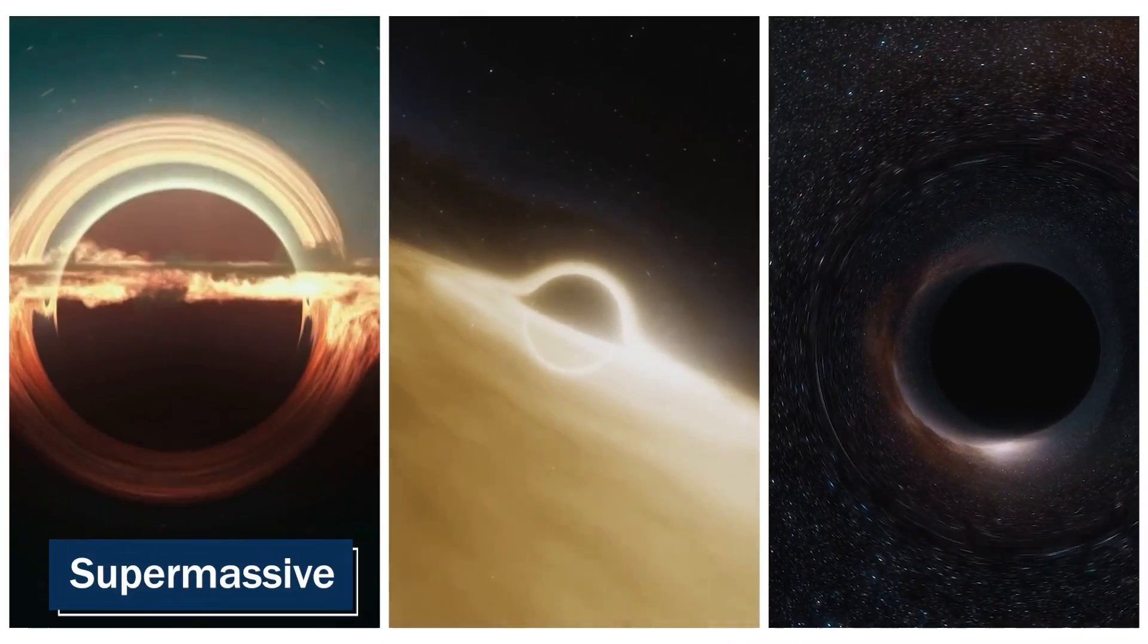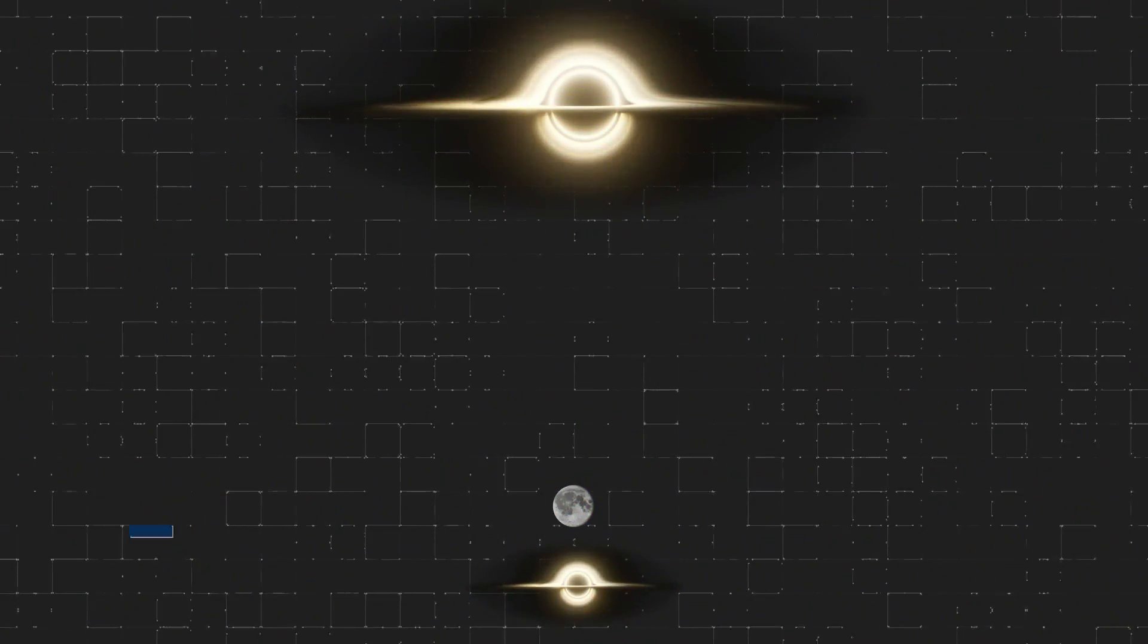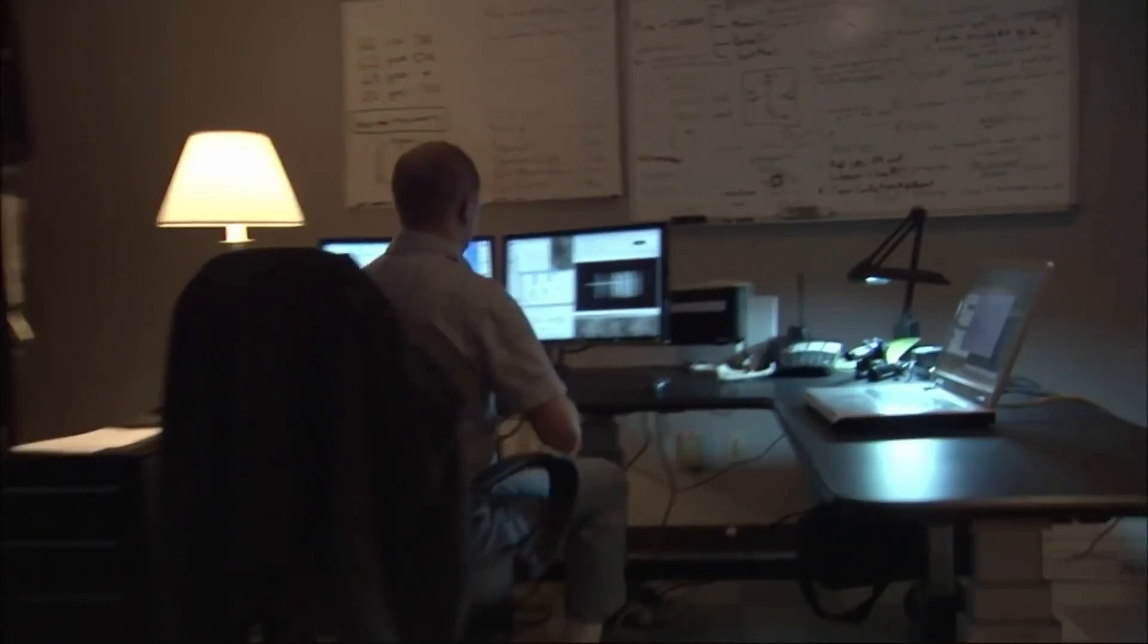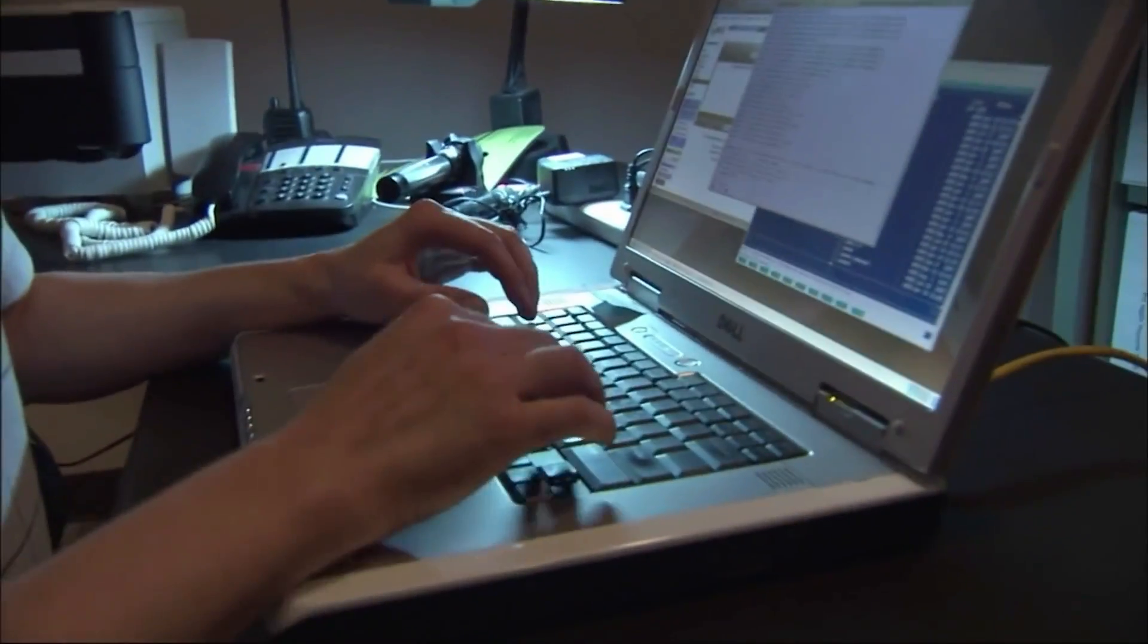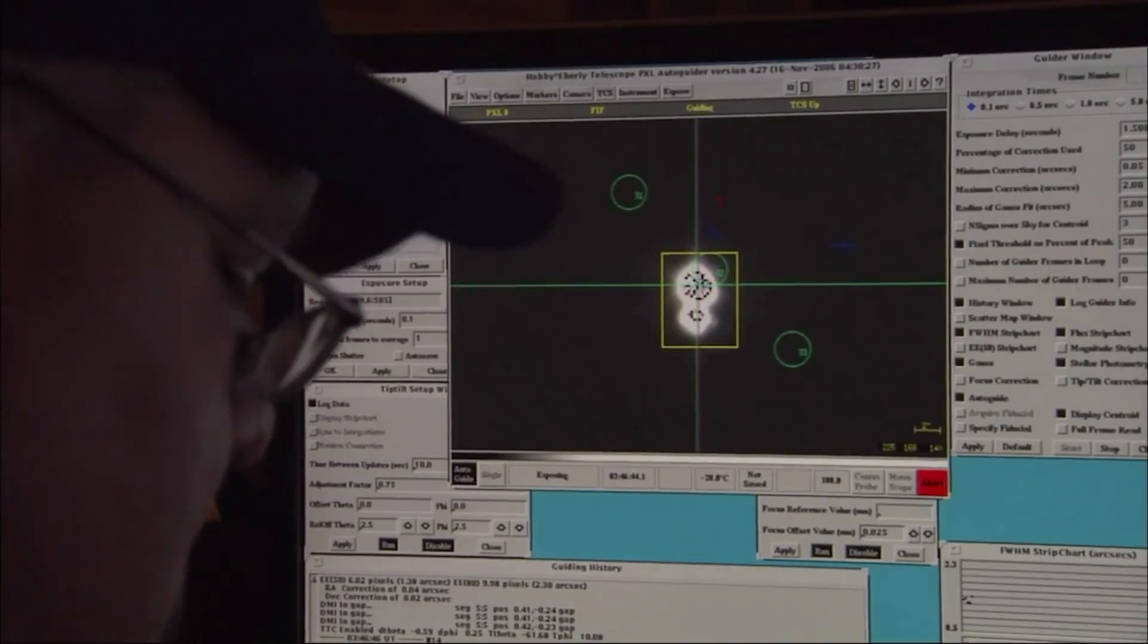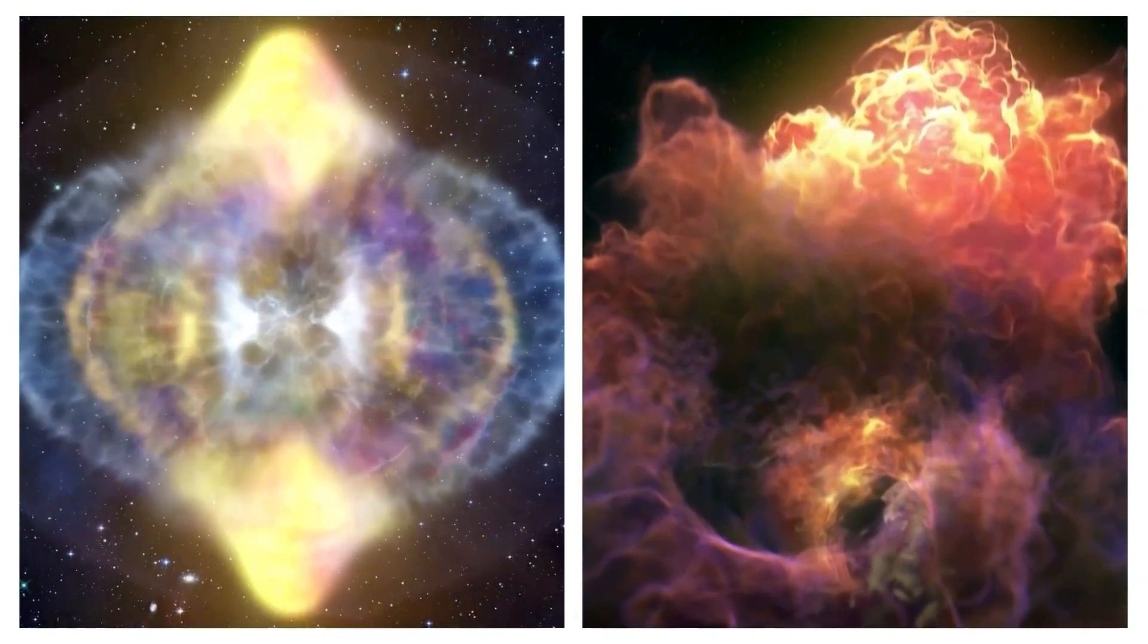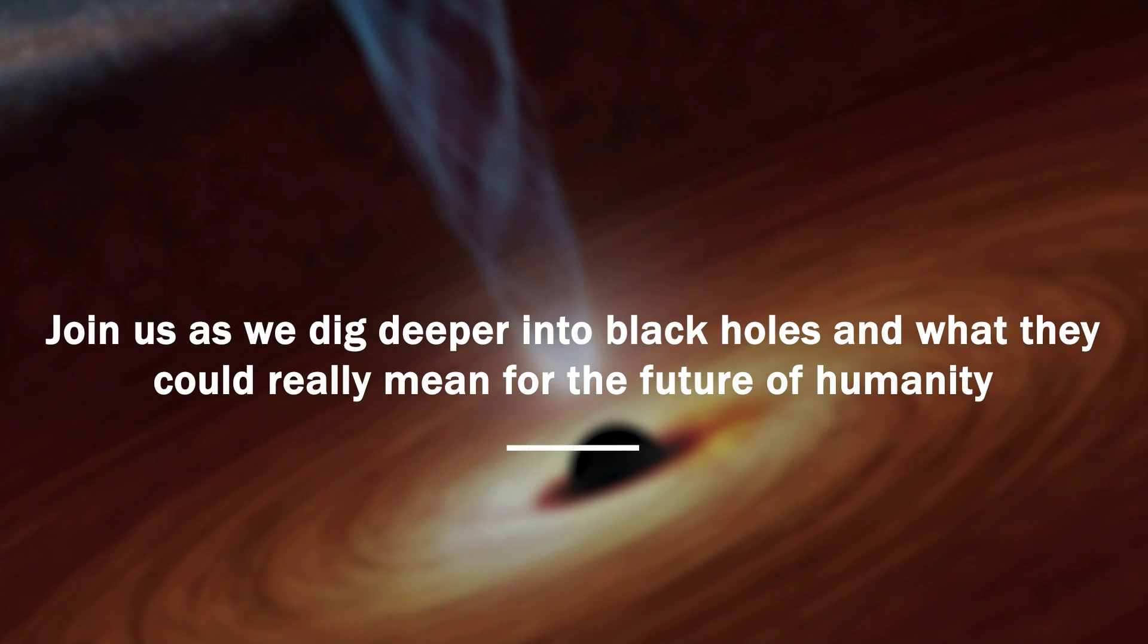In fact, the supermassive black hole at the center of our Milky Way is estimated to be 4 million times more massive than our Sun. Scientists are still trying to fully understand how these incredibly powerful objects form and interact with their surroundings. And while doing that, they've made a terrifying discovery. It's about to change everything.